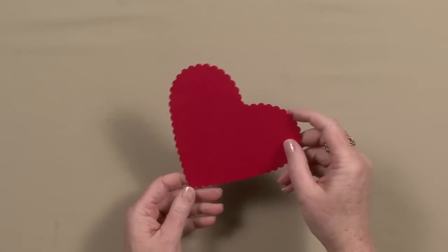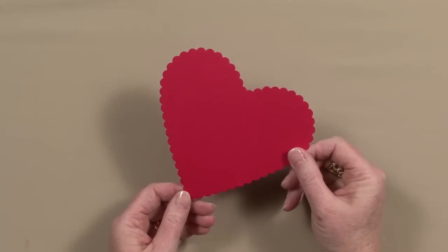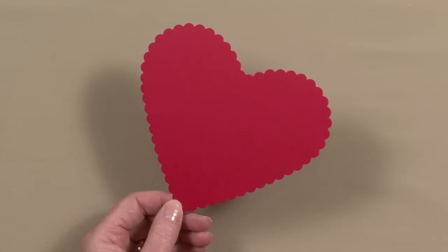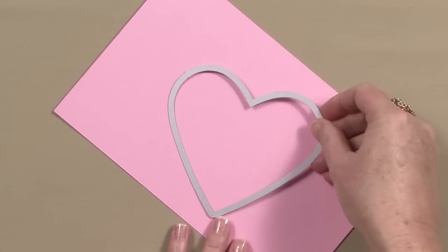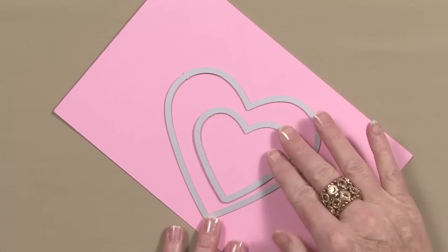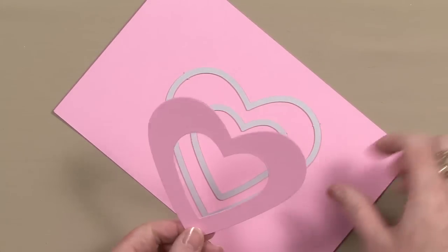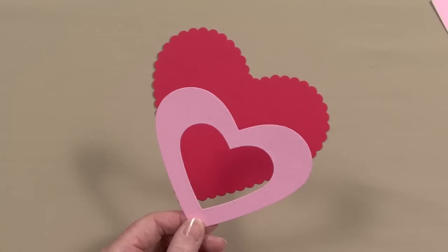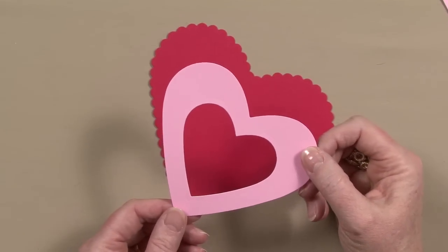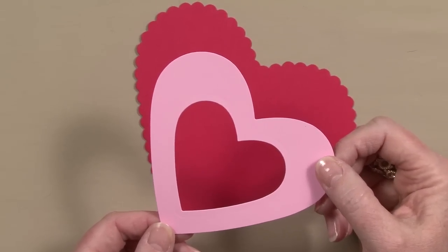Now you can do several things with these Framelit dies. You can cut out a single heart, like this one, or you can layer them to create a frame shape. Here's one that I cut out earlier. And with six different sizes, you have lots of options to create the size of frame that you would like.